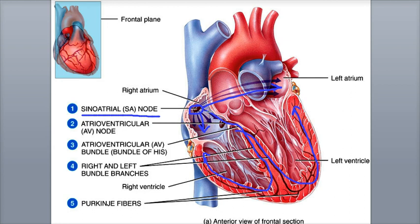The signal passes through both atria, then to the AV node, through the AV bundle, down the right and left bundle branches, and then up the walls of the ventricles through the Purkinje fibers.